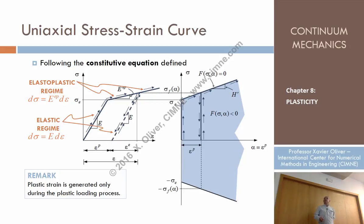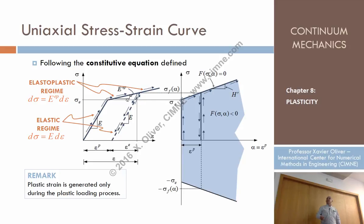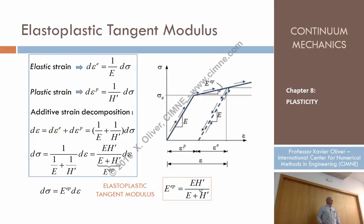We reach the yield surface — the first yield stress is the elastic limit. At this point, we want to increase the stress, but we cannot overcome the elastic domain, so we have to generate plastic strain. Now we move generating plastic strain, and incrementally the relation of stresses and strain is no longer elastic. It follows another modulus, which is the elastoplastic modulus, which can be computed with that formula.